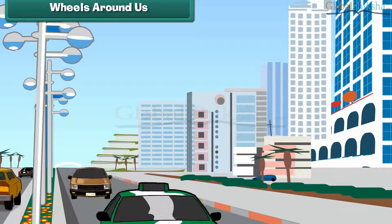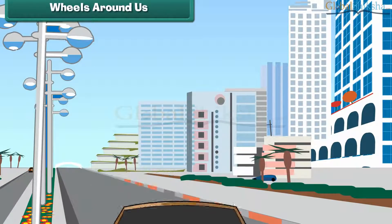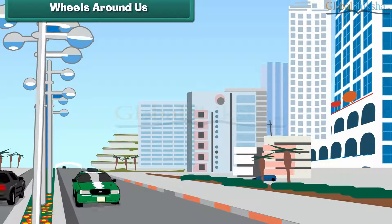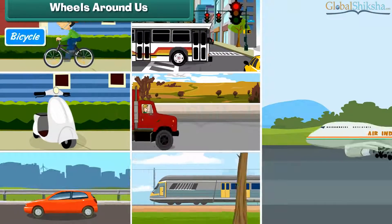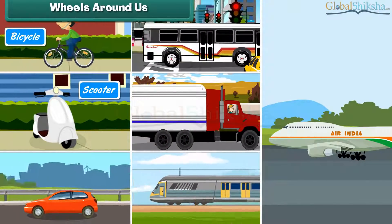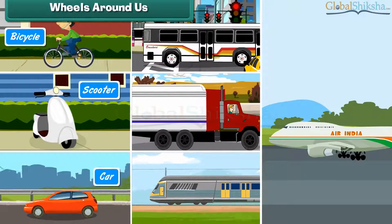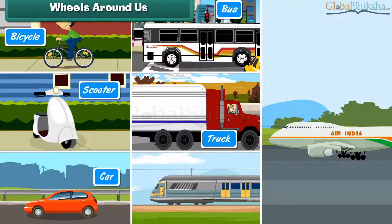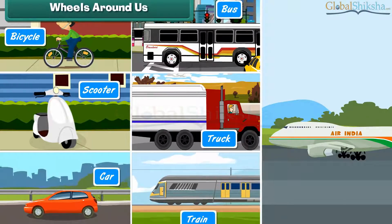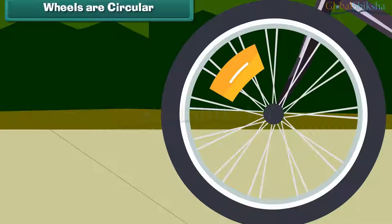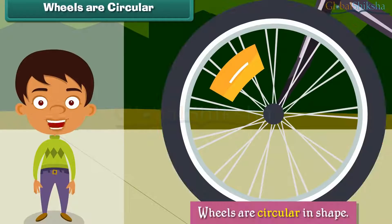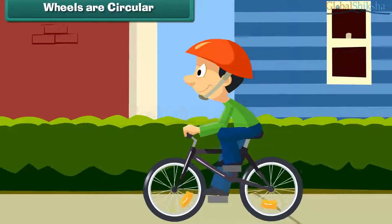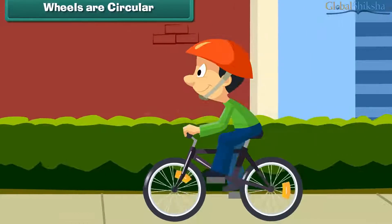Wheels around us. All vehicles that move on roads, such as bicycles, scooters, cars, buses and trucks, trains and even airplanes, have wheels. Wheels are circular in shape. Their shape allows easy movement.